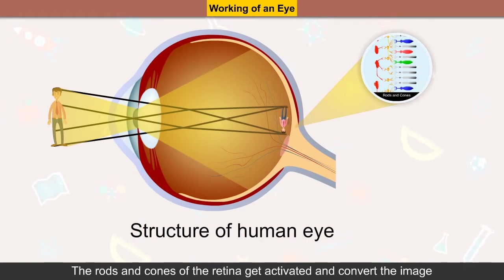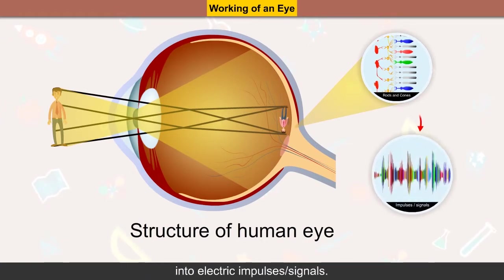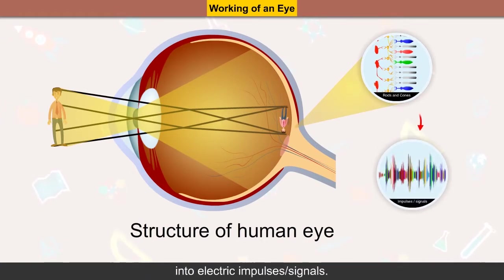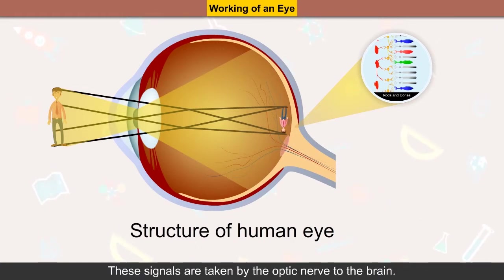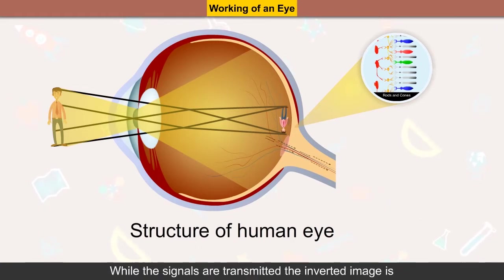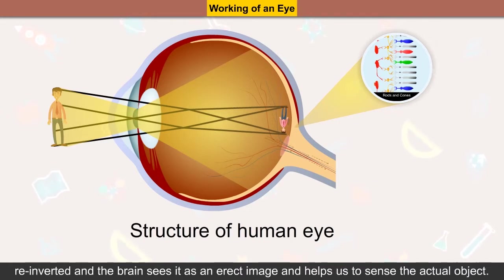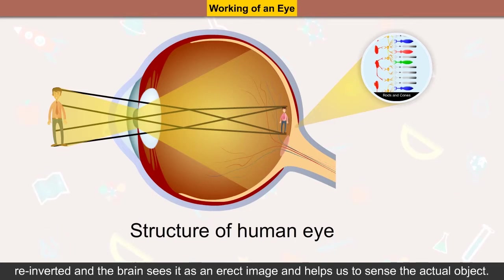The rods and cones of the retina get activated and convert the image into electric impulses or signals. These signals are taken by the optic nerve to the brain, where the inverted image is re-inverted, and the brain sees it as an erect image and helps us sense the actual object.